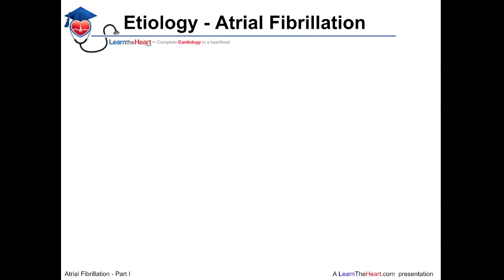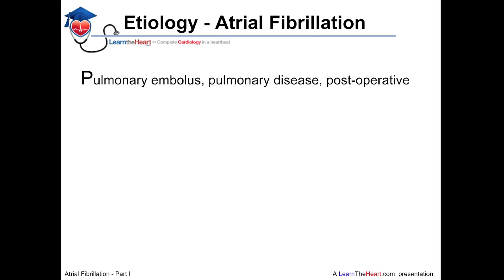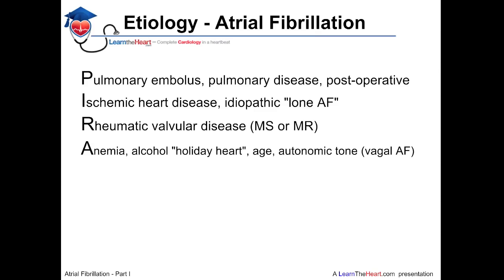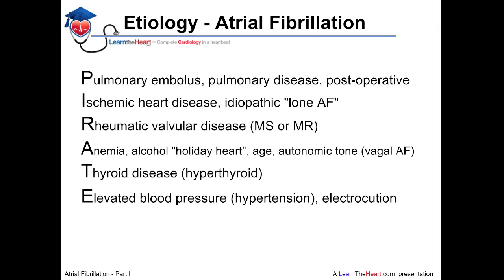A good mnemonic to remember the etiologies of atrial fibrillation is PIRATES. P stands for pulmonary embolus, pulmonary disease, or postoperative. I stands for ischemic heart disease or idiopathic, which could also be termed lone atrial fibrillation. R is rheumatic valvular disease, specifically mitral stenosis or mitral regurgitation. A stands for anemia, alcohol — also known as holiday heart — age, and autonomic tone, which implies vagal atrial fibrillation. T is thyroid disease, specifically hyperthyroidism. E stands for elevated blood pressure, which is hypertension — thought to be the most common cause of atrial fibrillation. Electrocution rarely can cause it as well.